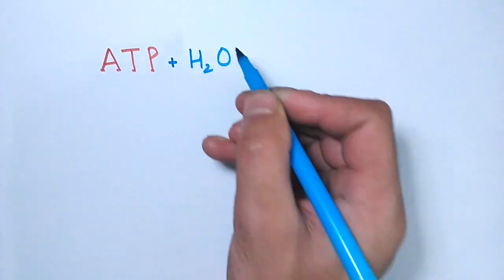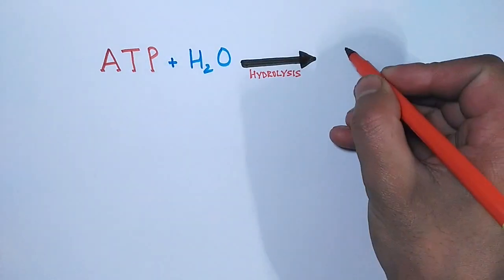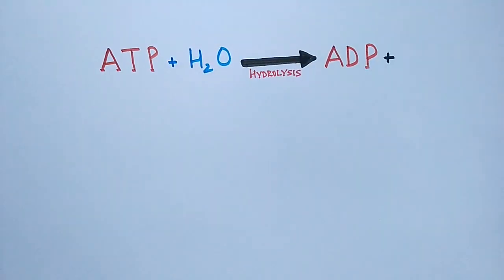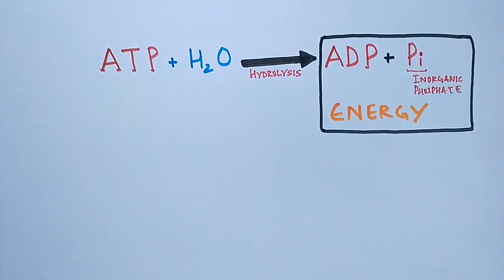In the hydrolysis reaction, the ATP is hydrolyzed by water molecule. In this reaction we get the products in the form of ADP, plus we get terminal phosphate in the form of inorganic phosphate, and also we get the energy. This energy comes from the bond which is broken between oxygen and phosphate - that's the phosphoanhydride bond.